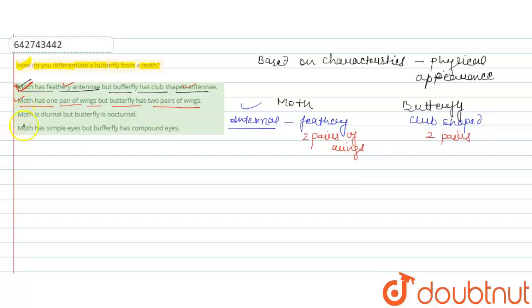So there is no difference. And the next option is: moth is diurnal and butterfly is nocturnal. So this option is also incorrect. Firstly, this is internal characteristics, and the moth is nocturnal—this option is given opposite. Moth is nocturnal and butterfly is diurnal.